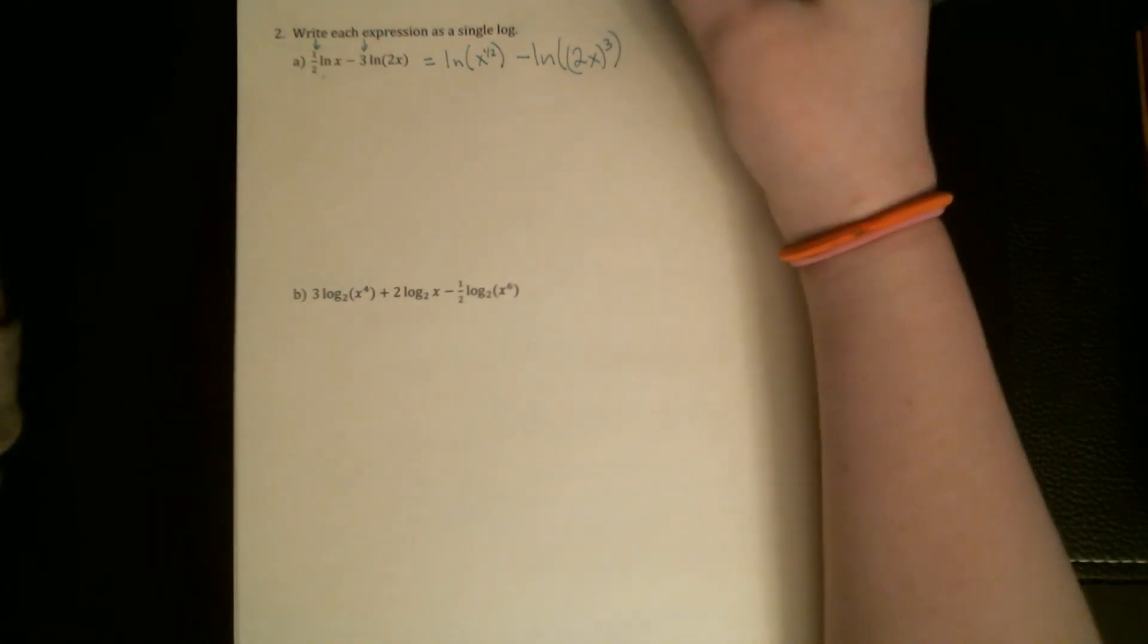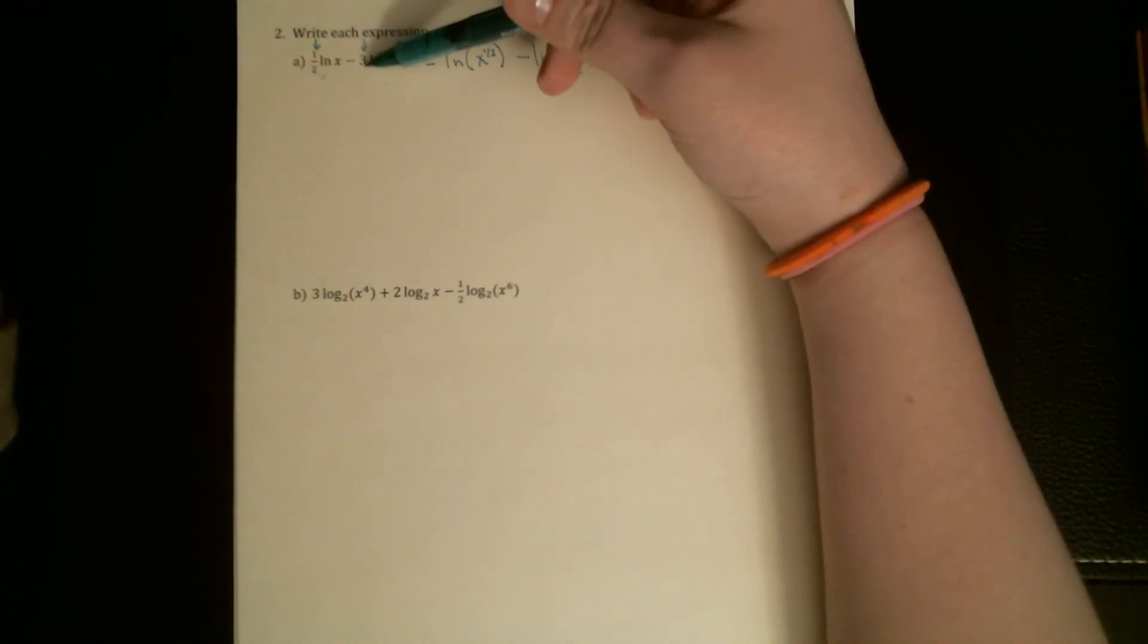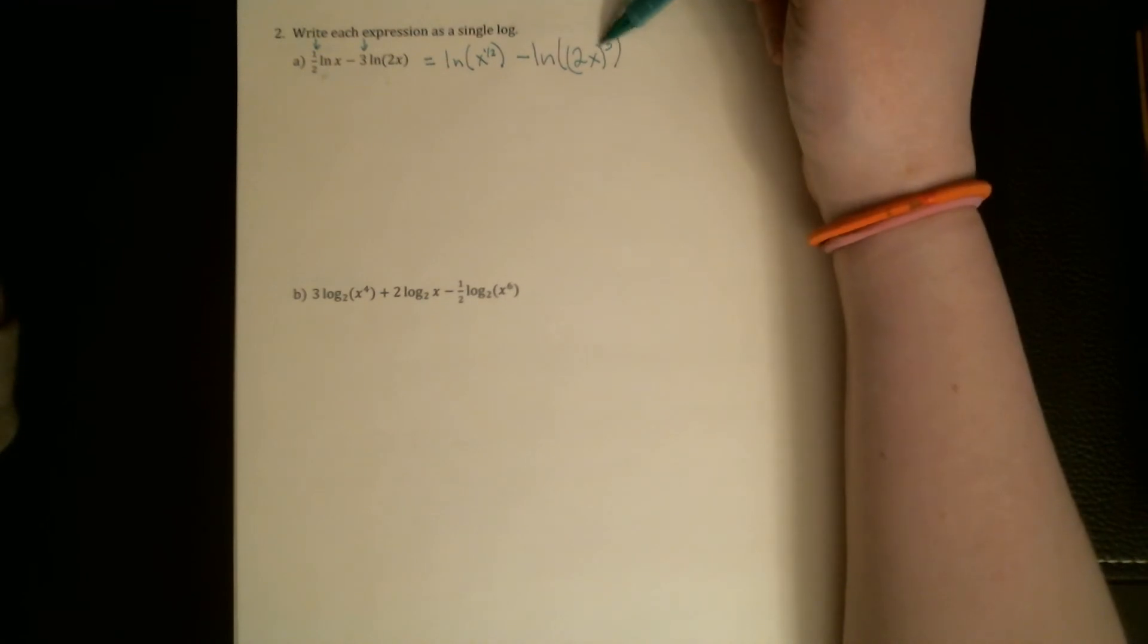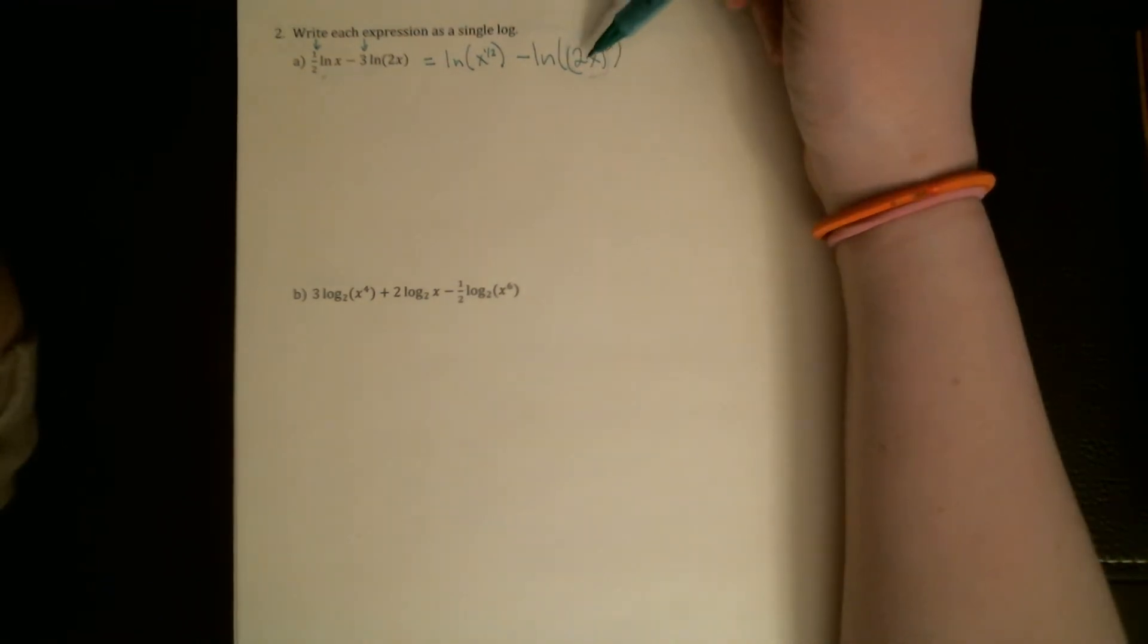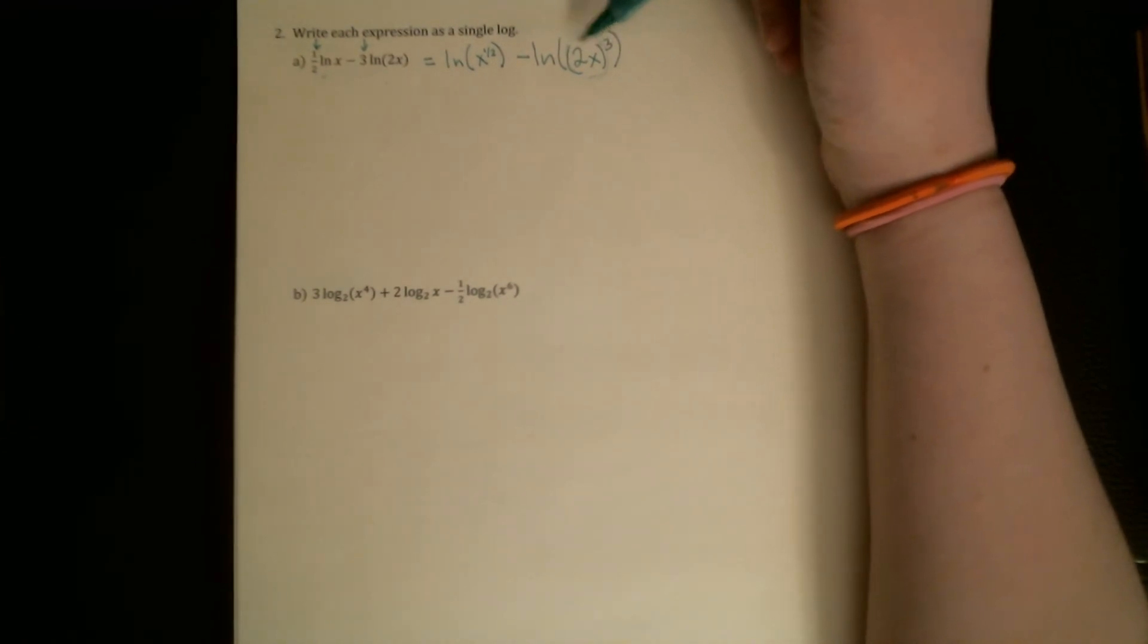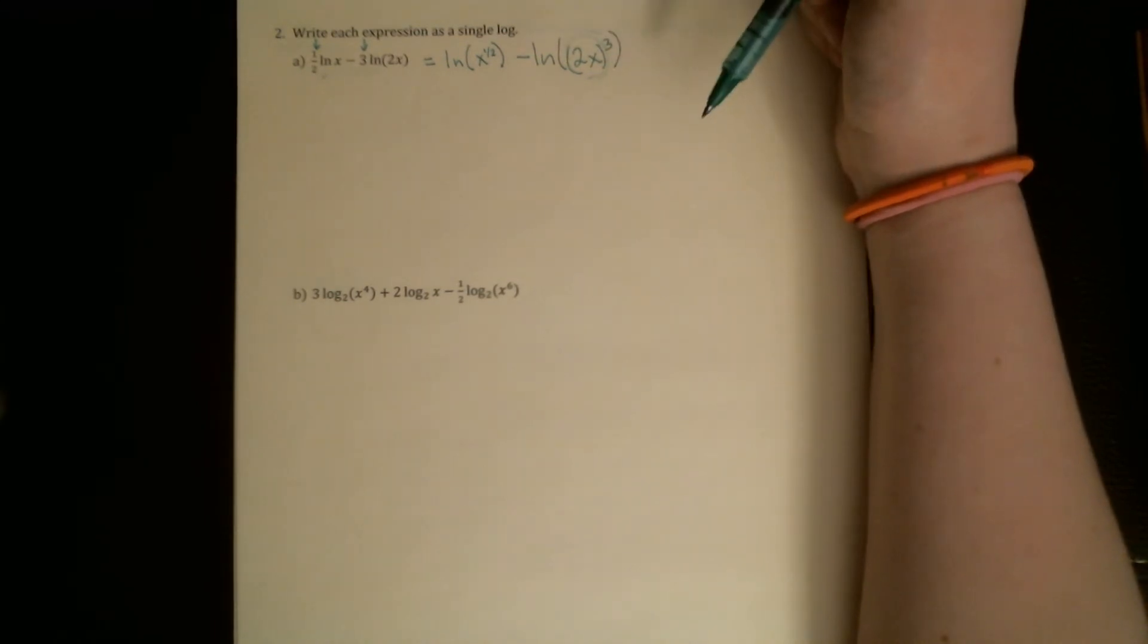Here is somewhere to be really careful: if the entire log was multiplied by the three, then when it moves up into the power the entire input is cubed. A lot of people will just say it's 2x cubed without the parentheses, but you're not quite right. You should end up with 2 cubed x cubed, so 8x cubed. Be really careful about that when you're moving coefficients up.